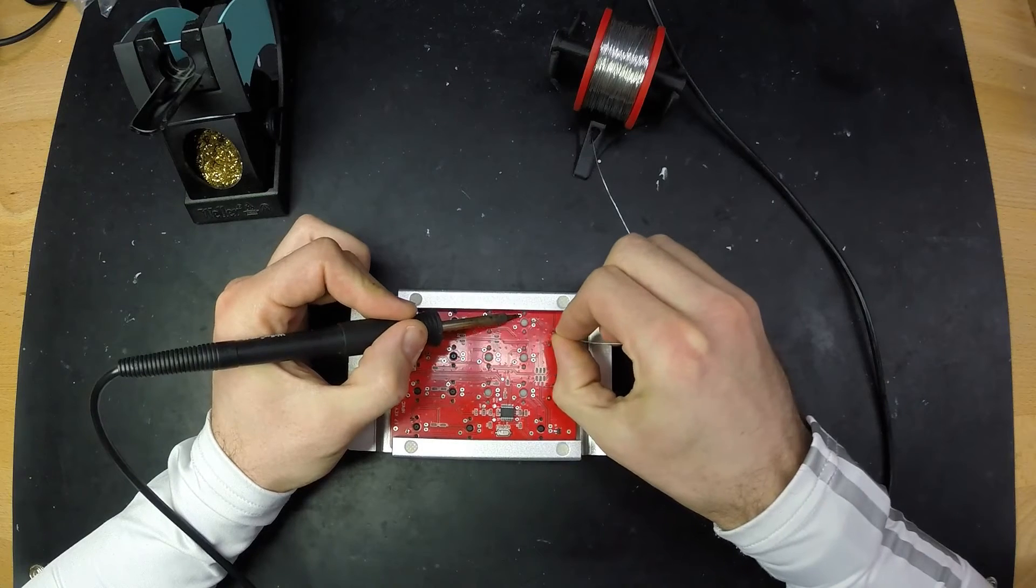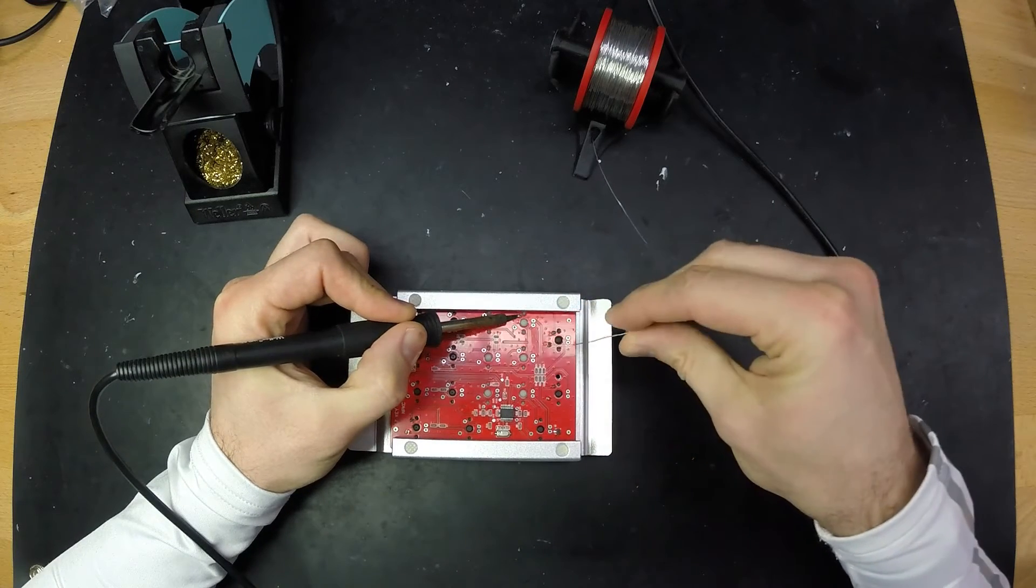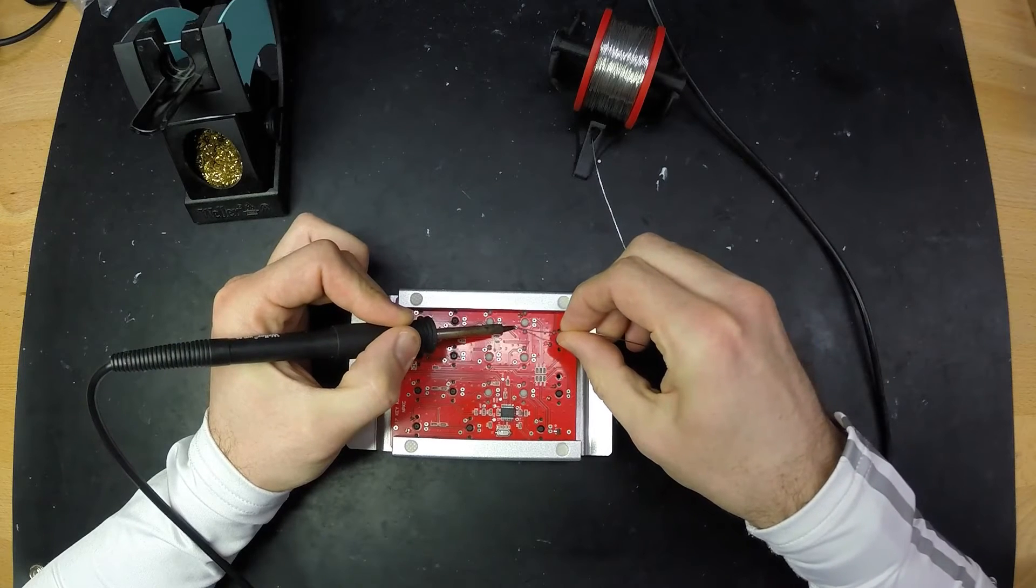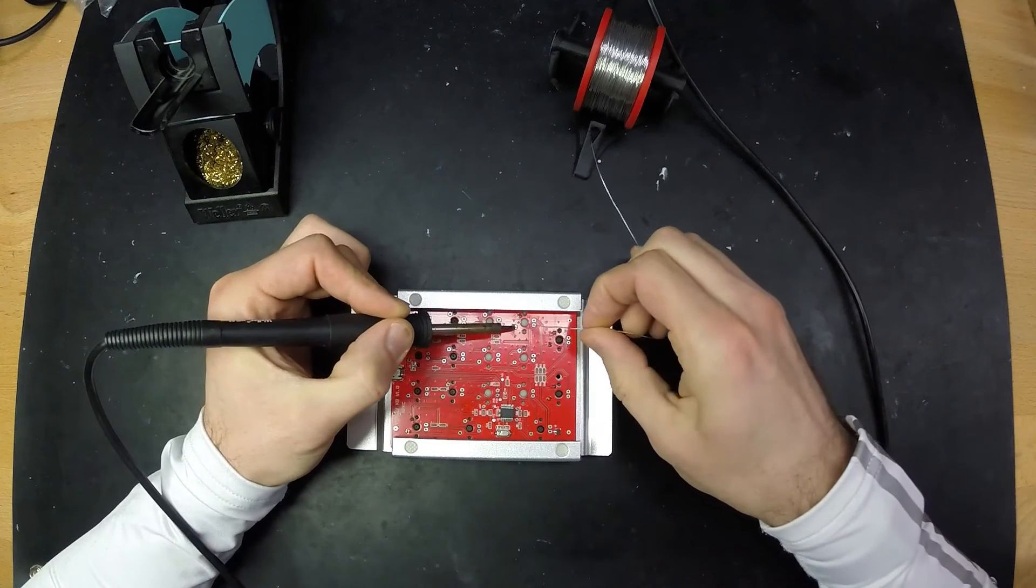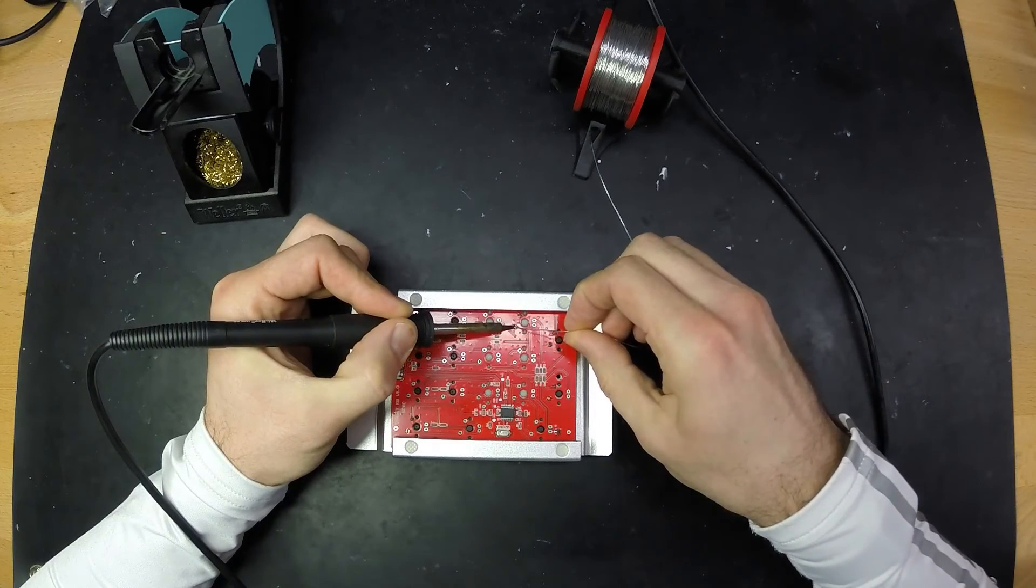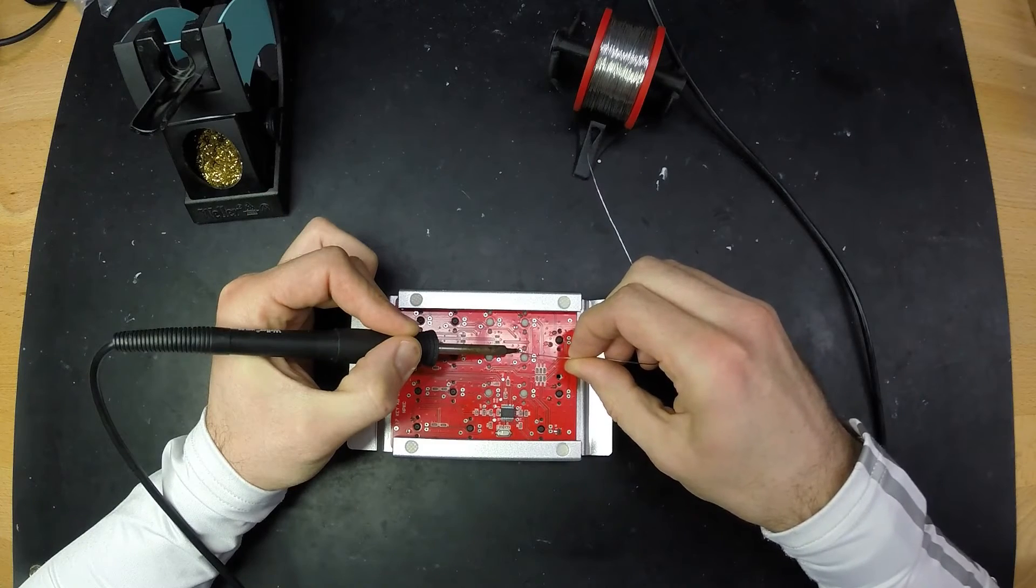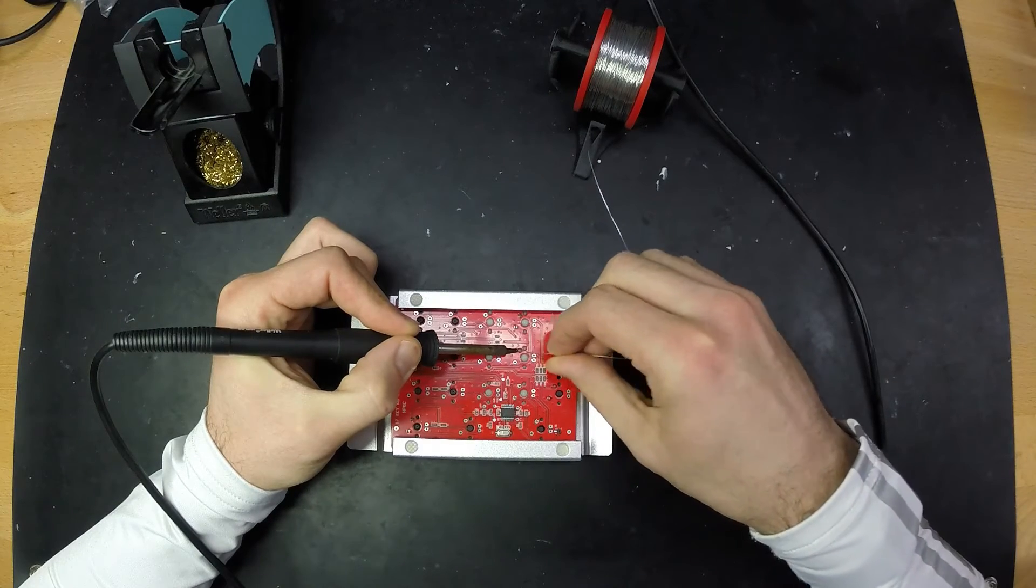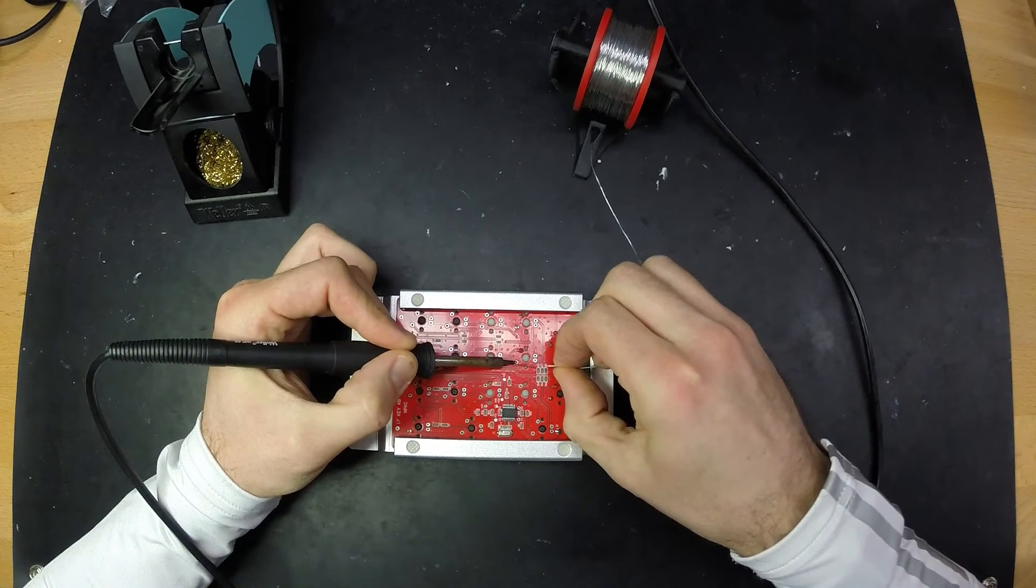I think I'm over applying sometimes. Adding some solder to the tip of the soldering iron will help transferring the heat from the tip to the PCB and the switch contact.